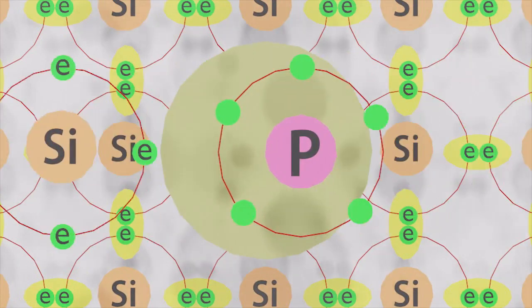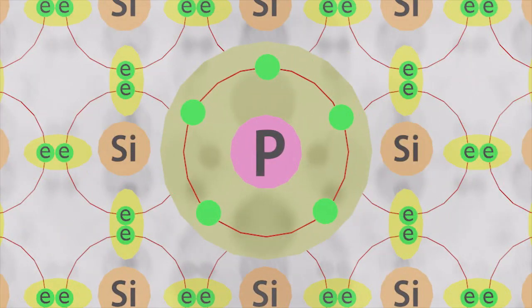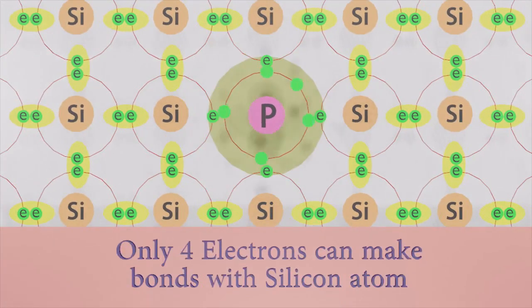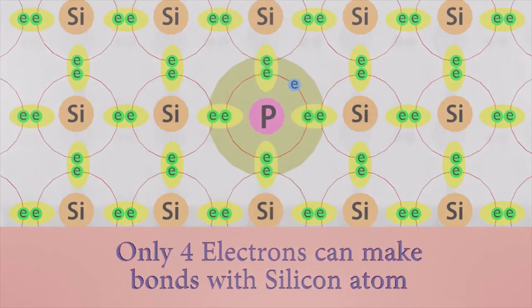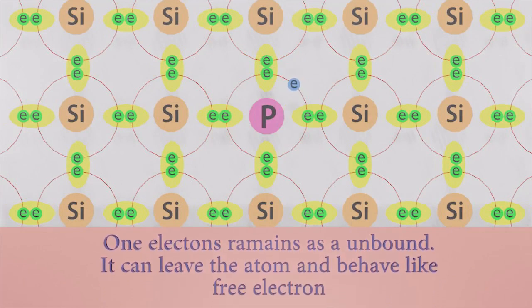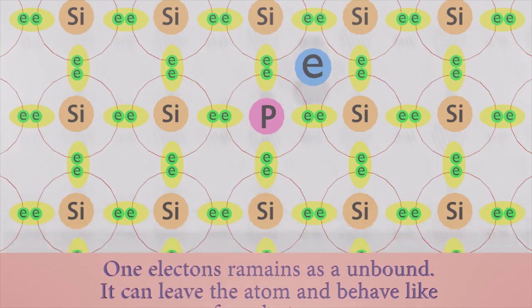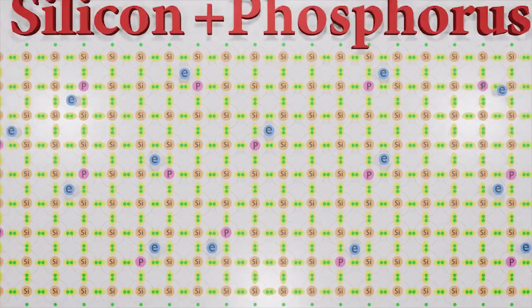If we remove a silicon atom and replace it by using a phosphorus atom that has five electrons in the valence band, it also has to behave like a silicon atom by bonding four electrons with surrounding silicon atoms. But what happens to the final electron? It is not bonded to any atom - it is a free electron. These can move freely. This is how n-type semiconductors are created.